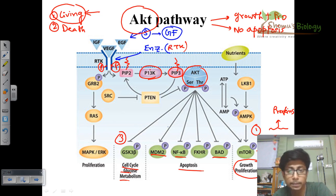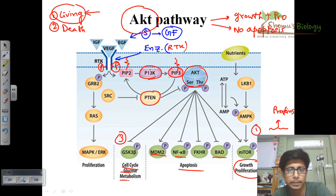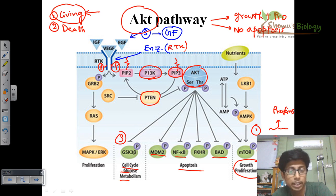This is how the AKT pathway works. Remember, the regulation of the AKT pathway involves PTEN, which acts as a regulator for PI3 kinase — because PTEN can shift PIP3 back to PIP2. If there is no PIP3, there won't be any AKT activated. So PTEN plays a vital role as a regulator of both PI3 kinase as well as the AKT pathway.